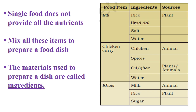Here a table is given showing the food items, their ingredients, and from where these ingredients come — that is the sources. For example, idli is a food item that takes ingredients such as rice, urad dal, salt, and water, and the main source is plants. Chicken curry uses chicken, spices, oil or ghee, and water, sourced from animals. Oil or ghee can be derived from plants or from animals like cows, where ghee is obtained from milk. Khir is made up of milk, rice, and sugar — milk from animals and rice from plants.